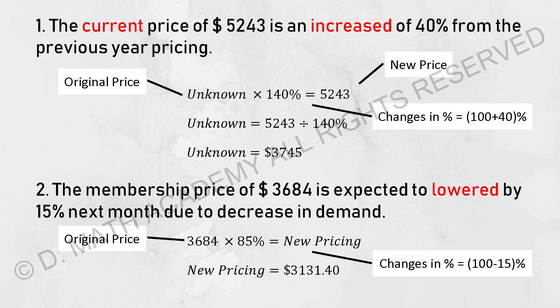To identify the previous year pricing, simply shift the 140% to the other side — divide it — and you will get 3,745.